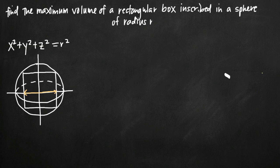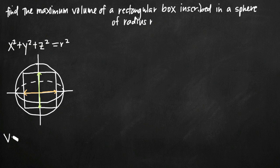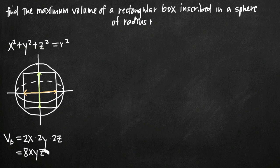Similarly, the height of the box is 2y and the depth is 2z. So the volume of the box is V = 2x · 2y · 2z, which simplifies to V = 8xyz.